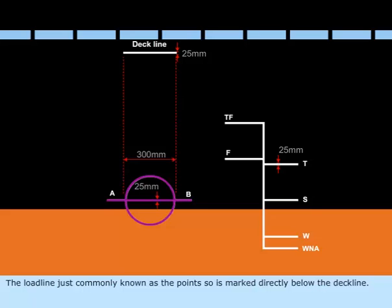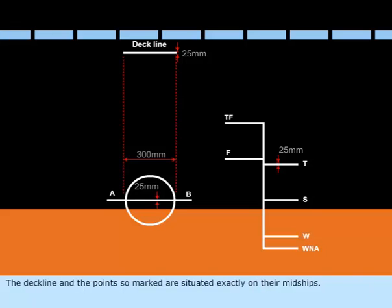The load line, just commonly known as the Plimsoll, is marked directly below the deck line. The deck line and the Plimsoll marked are situated exactly on their midships.